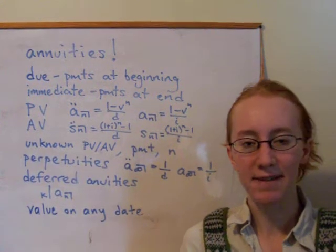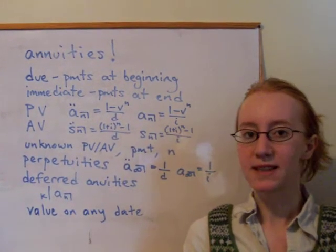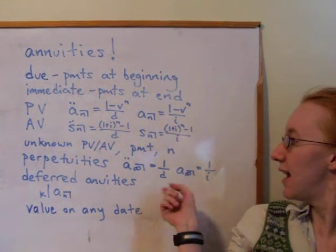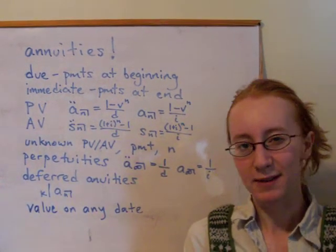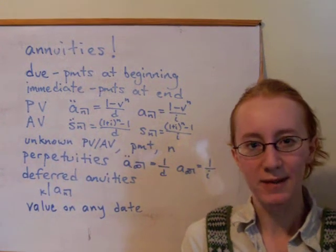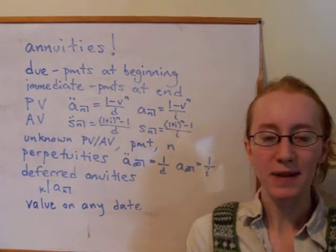A perpetuity immediate would have the first payment starting at the end of the current period. And in both cases we can get these results here, and they just come from looking at the sum of an infinite geometric series. Because the ratio is going to be less than 1, V is always less than 1, we're going to have that converge to these really nice formulas right there.